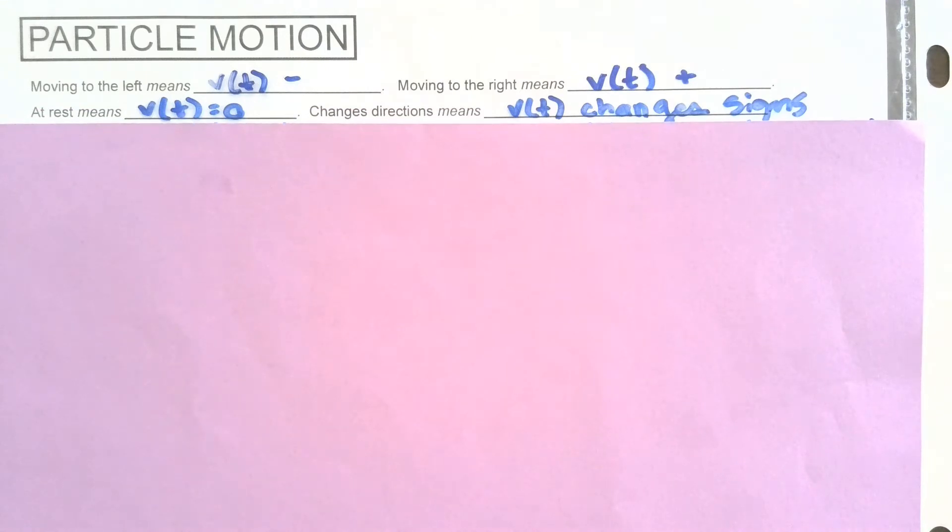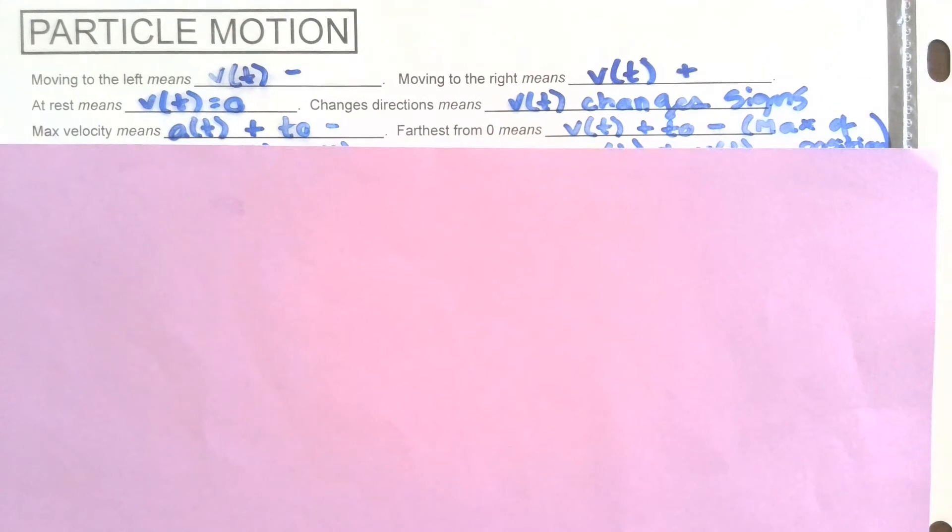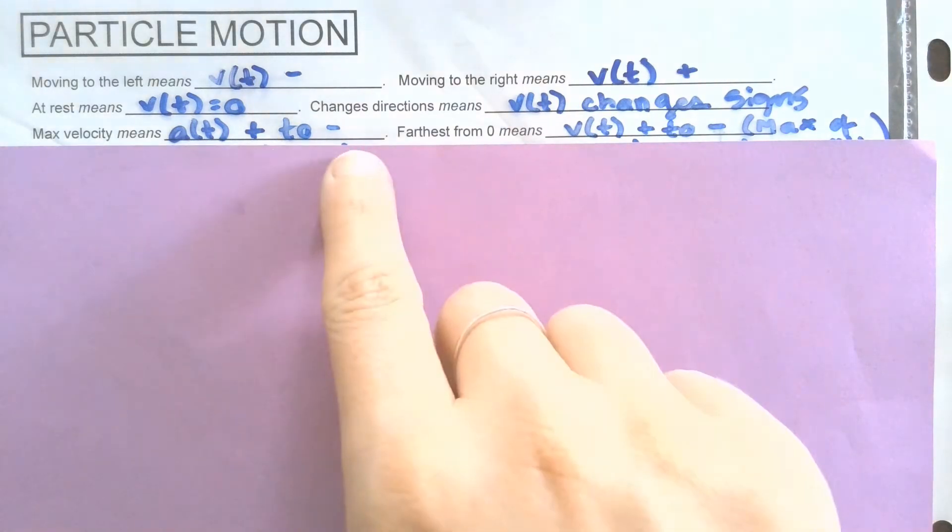If we're talking about something being at rest, the velocity is equal to zero. And if it changes directions, that velocity changes sign. So it's headed left and now it's going right, or vice versa. If we're looking for max velocity, we would want to see where its derivative goes from positive to negative, just like from f to f prime. If that goes from increasing to decreasing, that means we have a max on the original there.